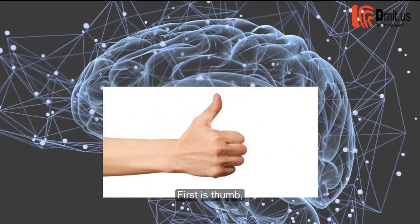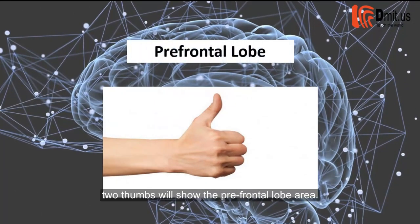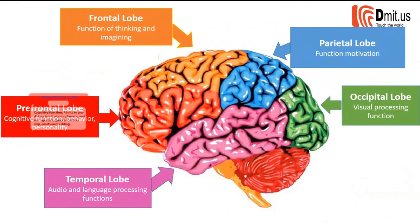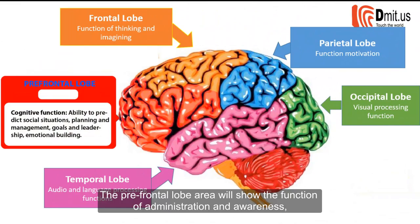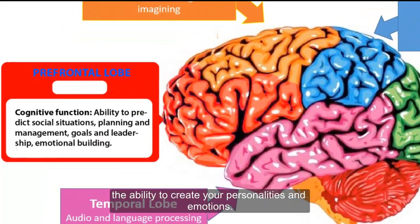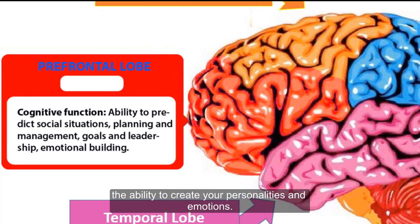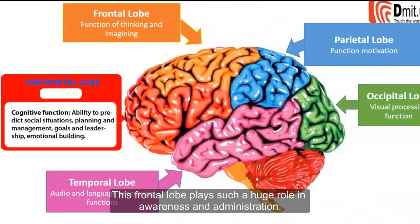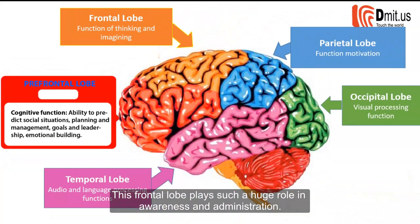First is the thumb. Two thumbs will show the prefrontal lobe area. The prefrontal lobe area will show the function of administration and awareness, the ability to create your personalities and emotions. The frontal lobe is known as a captain to direct our body and behavior — where do we want to drive the ship to? The captain will firstly give you the direction. This frontal lobe plays such a huge role in awareness and administration.